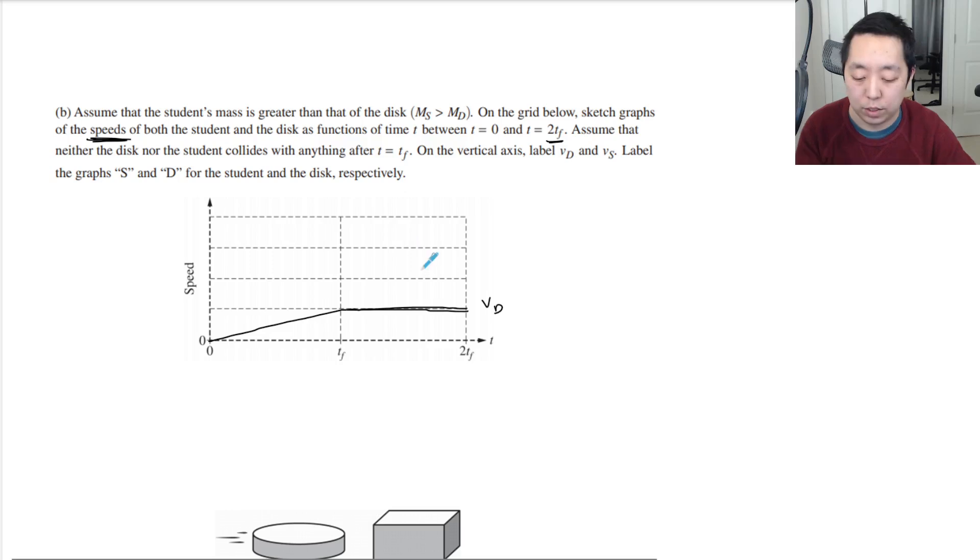The disk is going to move faster, so this would be VS for the student. You don't know exactly how much more, just that MS is greater than MD, so the disk is definitely going to be more. I'll exaggerate them higher up a little bit, because the student is probably a lot bigger than a disk realistically, and this ratio would be the ratio of their masses.